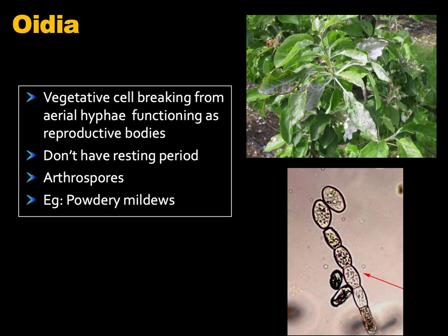Oidia are the vegetative cells that break from the aerial hyphae, functioning as reproductive bodies. They do not have a resting period. Many times we term them as arthrospores. Organisms like powdery mildew produce oidia as a specialized type of structure.